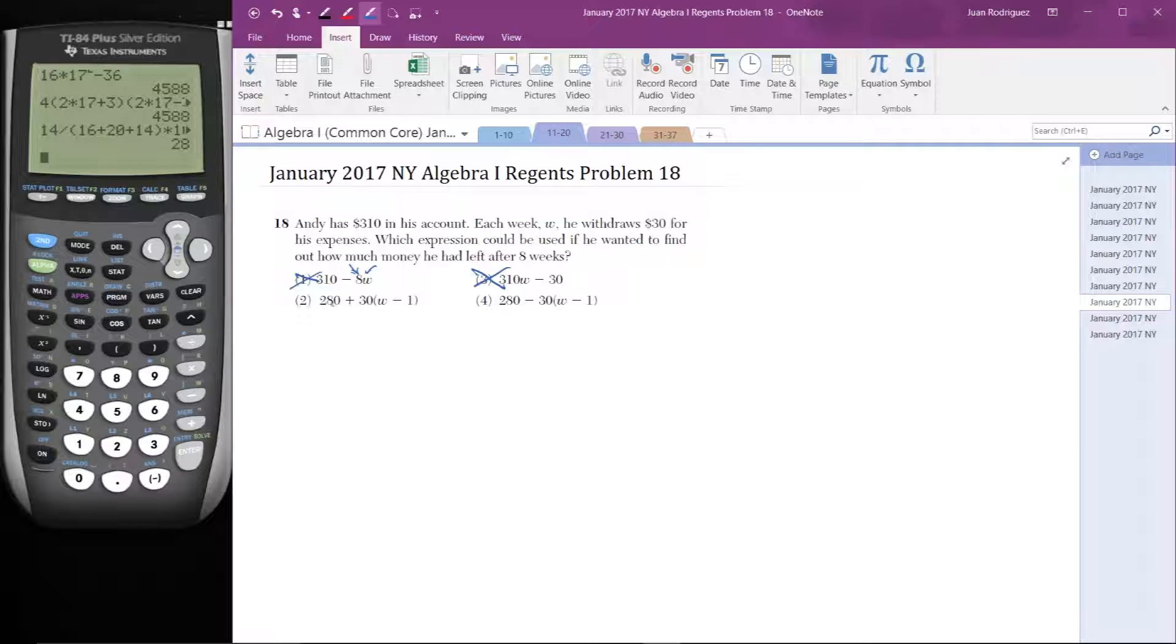Now let's try this one: 280 plus 30 times W minus 1. This one doesn't satisfy my gut check. If after 8 weeks he's been taking out money for a while, I know his balance is going to go down. In fact, it's going to go by 30 eight times, so his money is less than 310. But if I plug an 8 into this problem, 280 plus 30 times W minus 1, 8 minus 1 is 7, 30 times 7 is positive, 280 is positive. This is greater than 310. So that's not it. So that remains this one.